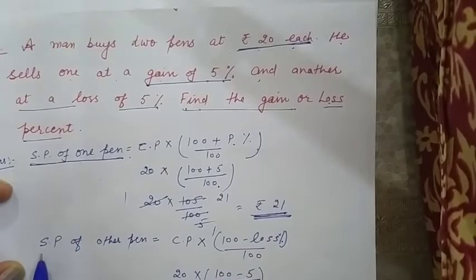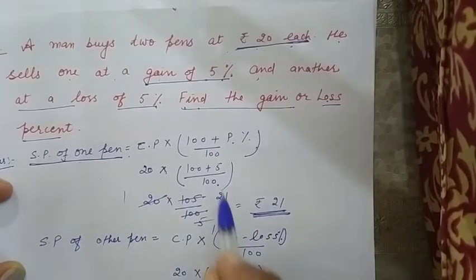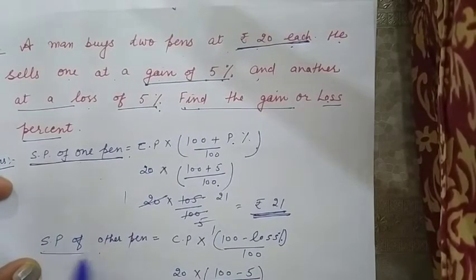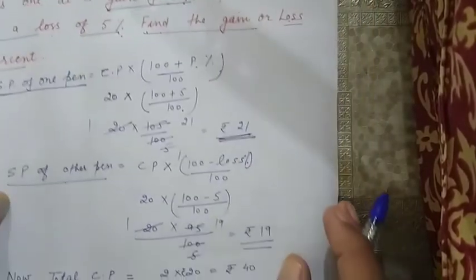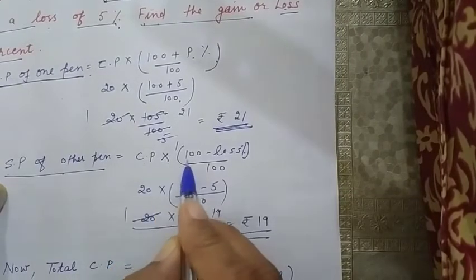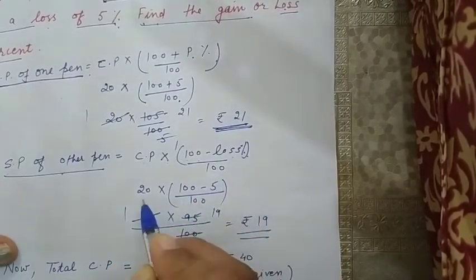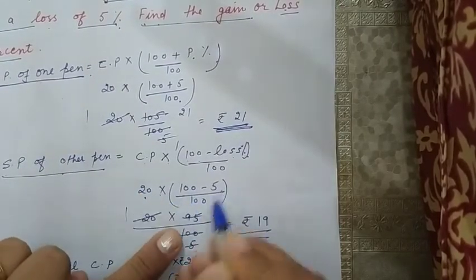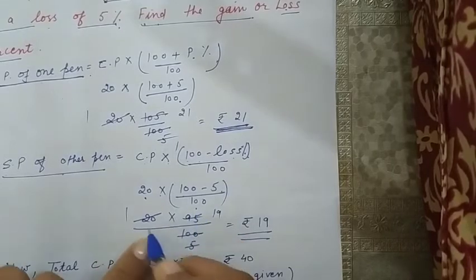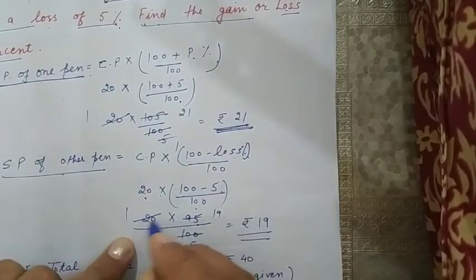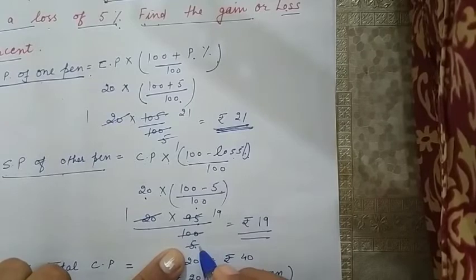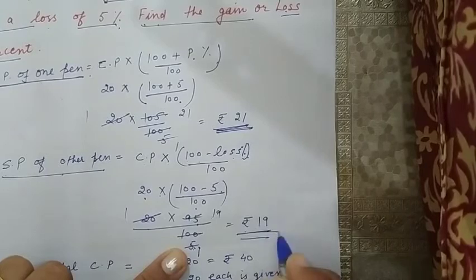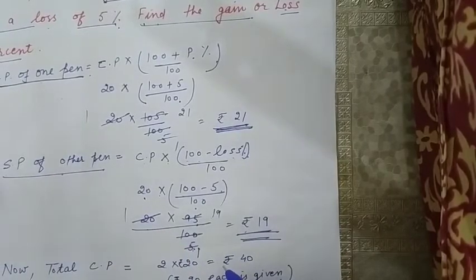Aab jho dousra pen hai. Usko kis me beseja hai? 5% loss per beseja hai. Toh uuska selling price kya ho jayega? Toh aap isme formula apply kare engi isme. CP multiply 100 minus loss percent. 20. CP toh sabhi me 20 rupiz ye hai. 20 multiply 100 minus 5 divided by 100. 20 multiply 95 by 100. Isko cancel karete hai. 20 by 20. 25 by 100. 5 by 5. 5 by 19 by 95. Toh rupees 19 joh hai. Dousre pen ka selling price hai.